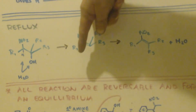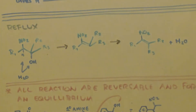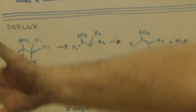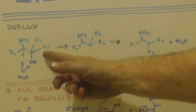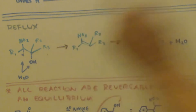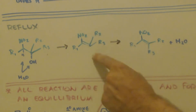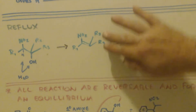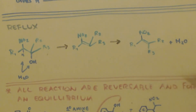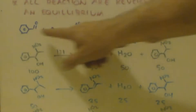The thing about this reaction is that everything is reversible and everything forms an equilibrium. When you make the nitropropene product, it actually goes back to the beta nitro alcohol because it's reversible. It keeps making the product and reverting until it reaches equilibrium. You get water and your product — but the equilibrium concept is important to understand.